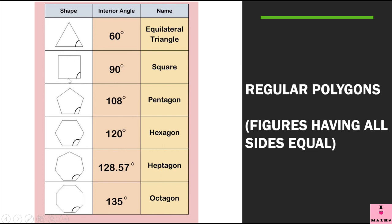Now square. This figure you have been studying since class 1 and even KG. Square is a quadrilateral or a four-sided figure where all four sides are equal in length. All four angles are also equal, and very easily you can make out that all four angles are 90 degrees each — it means we have four right angles in a square. Now we come to pentagon. Pent means five. Pentagon is a five-sided figure and a regular pentagon has all five sides equal and all five angles equal. Each angle is 108 degrees.